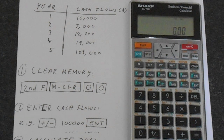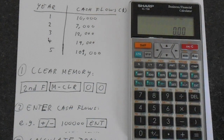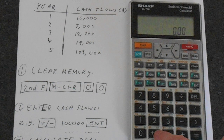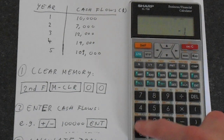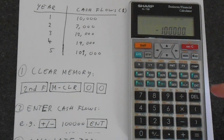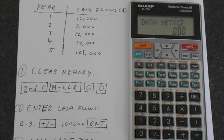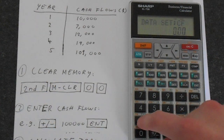Start with the investment first — that goes into cash flow zero. The plus/minus button at the bottom gives you the negative sign, so enter negative one hundred thousand and press the enter button to store it into the cash flow data set. The manual labels it 'data' but just think of it as enter.